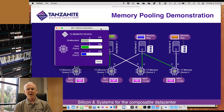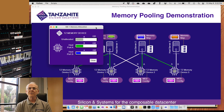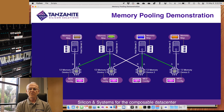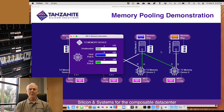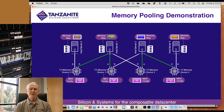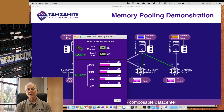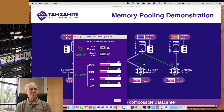MD1 provides six gigabytes of memory to host one and four gigabytes of memory to host two. Similarly, MD2 provides six gigabytes of memory to host one and four gigabytes of memory to host two. If we then look at the host view for host one, we see a similar view except in the opposite direction — what the host is seeing is memory provided by three particular MDs.